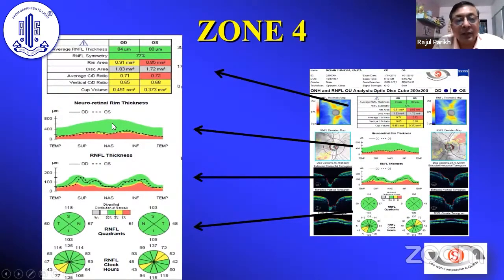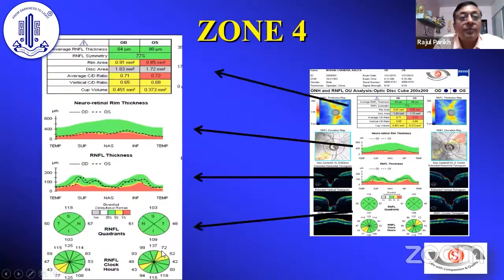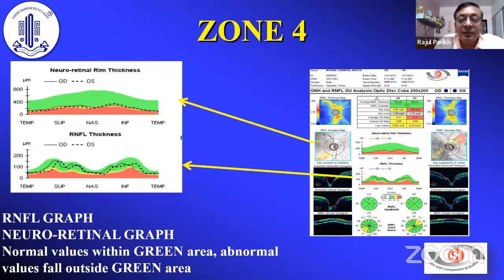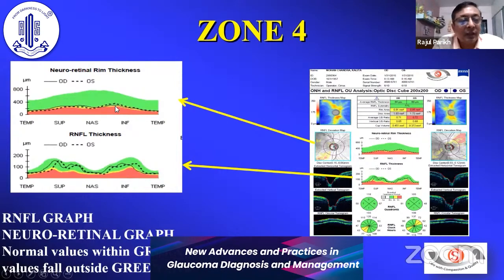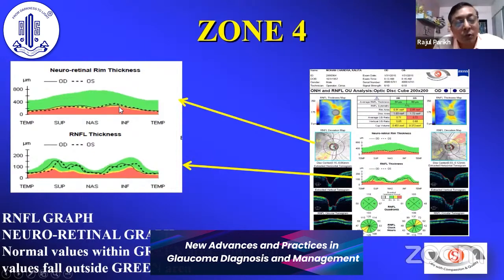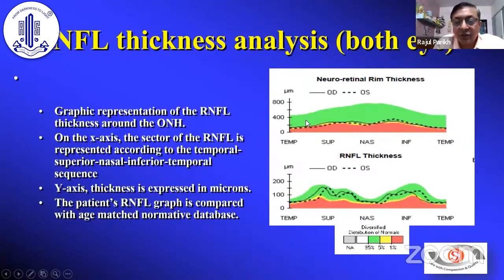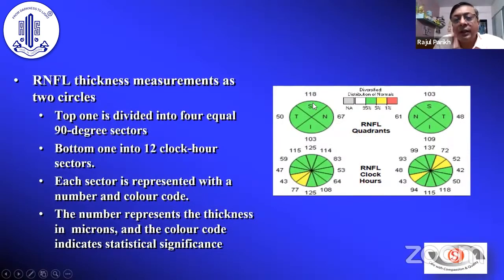Zone 4 contains all other data: the XY graph of neuro-retinal rim thickness and RNFL thickness, quadrant-wise analysis of RNFL, each clock-hour, and a table about disc area, rim area, and average RNFL thickness. The RNFL graph gives a comparison between right and left eyes — dotted is left, solid is right. The quadrant analysis divides into superior and inferior quadrants, which are more important compared to nasal and temporal. Similarly, superior and inferior clock-hours like 5–6–7 and 11–12–1 are more important than temporal and nasal clock-hours.